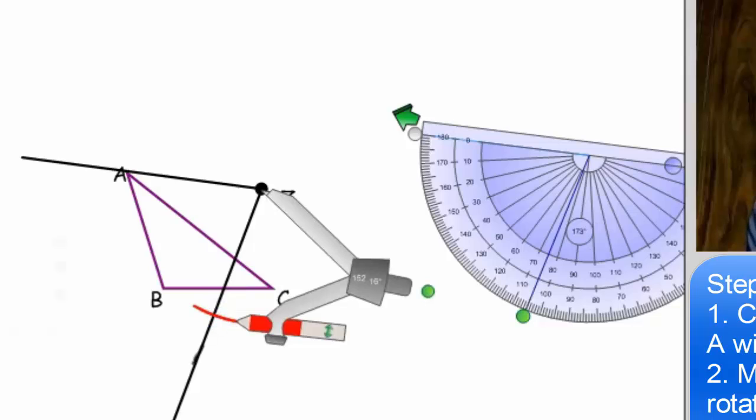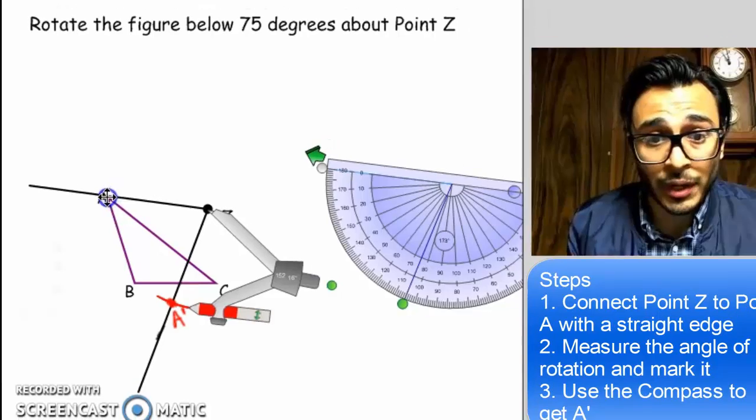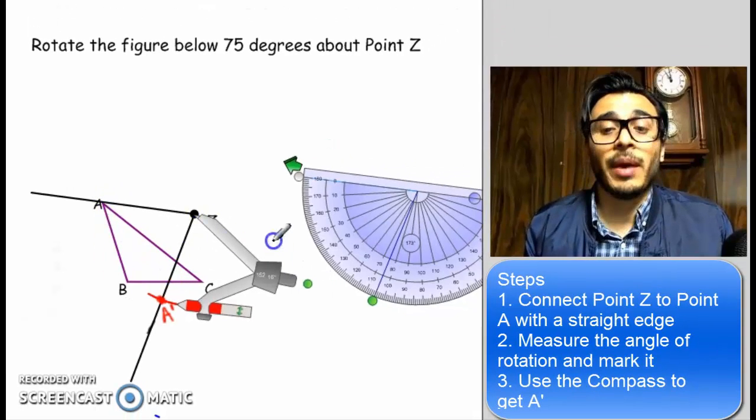If you want to do the whole arc that's cool. I'm not going to do it because it looks a little messy, and since this is an introductory video I don't want to make it look messy. So that point of intersection right there I'm going to call it A prime. So I did it. I just rotated point A 75 degrees about point Z.